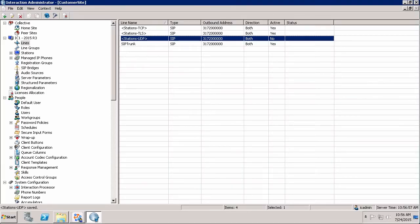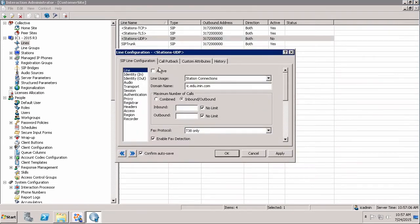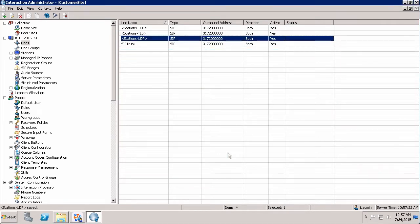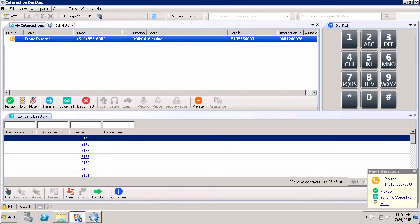To correct this problem, you're going to want to notify someone who has access to Interaction Administrator who can go in and check the registration line for those phones and see if it's activated or not, or if something has been changed in it. As soon as we make the line active again and click OK, users will be able to again pick up calls using their Interaction Desktop client.